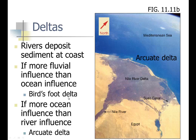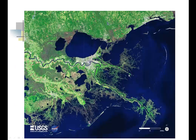You have a bird's foot delta when there's more river influence. If there's more ocean influence — more waves — you get the arch shape. Here's a bird's foot delta: the Mississippi River Delta. As it moves over you can see it branches and zigs and zags. As it fills in an area it gets too high and breaks off somewhere else. There's Louisiana and New Orleans, and the lake that caused a lot of problems for New Orleans when Hurricane Katrina came through.